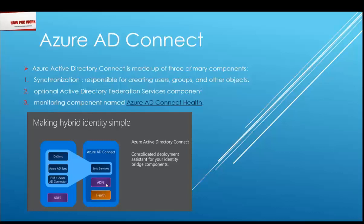The synchronization service is mostly responsible for seeing objects already created on-premises — like users, modified user properties, created groups, added group members, and other objects that need to be synced with the cloud Active Directory. We'll move into the demo part and log on to the Azure portal, download Azure AD Connect, and configure the options.